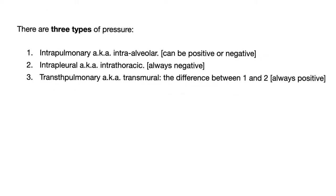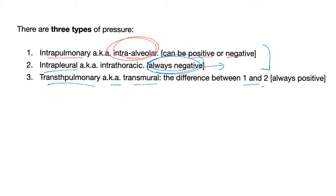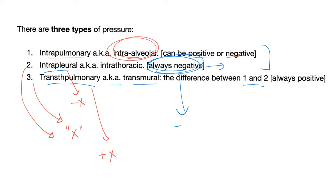There are three types of pressure. Intrapulmonary pressure — pressure in the lung/alveoli — can be positive or negative. Intrapleural pressure is always negative in a normal person. Transpulmonary (transmural) pressure is the difference between the two. Intrapleural and transpulmonary have the same magnitude but opposite signs: if intrapleural is −6, transpulmonary is +6.